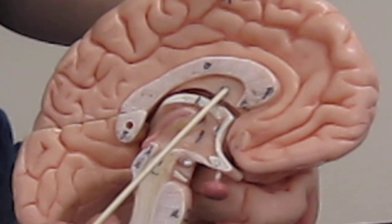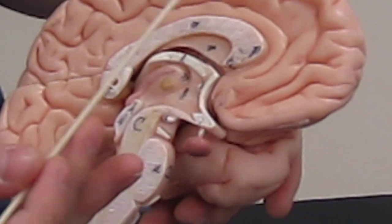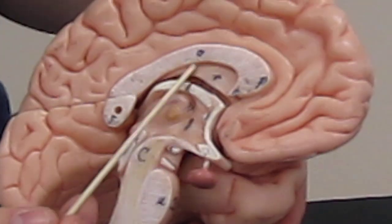The septum pellucidum is located directly below the corpus callosum. The fornix is this white region, located right beneath the septum pellucidum.